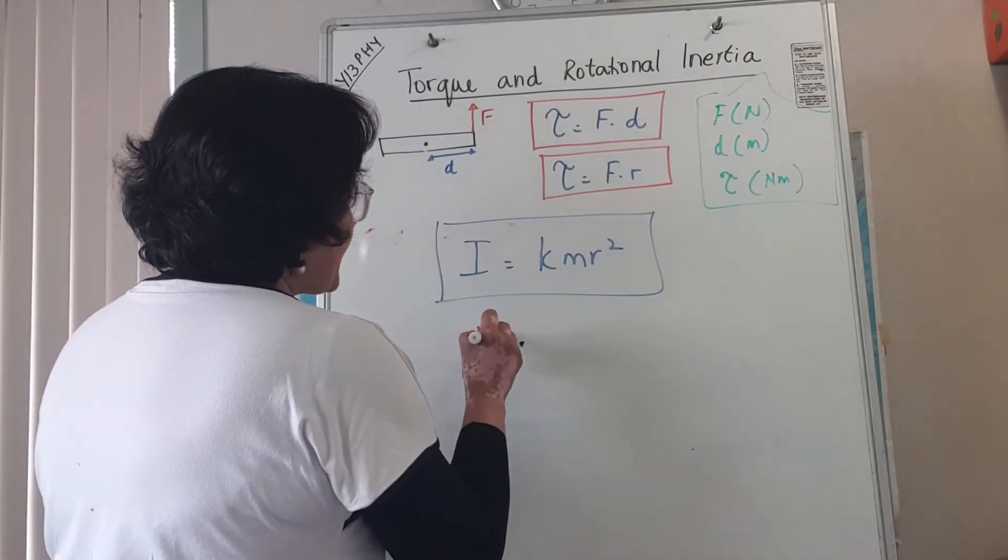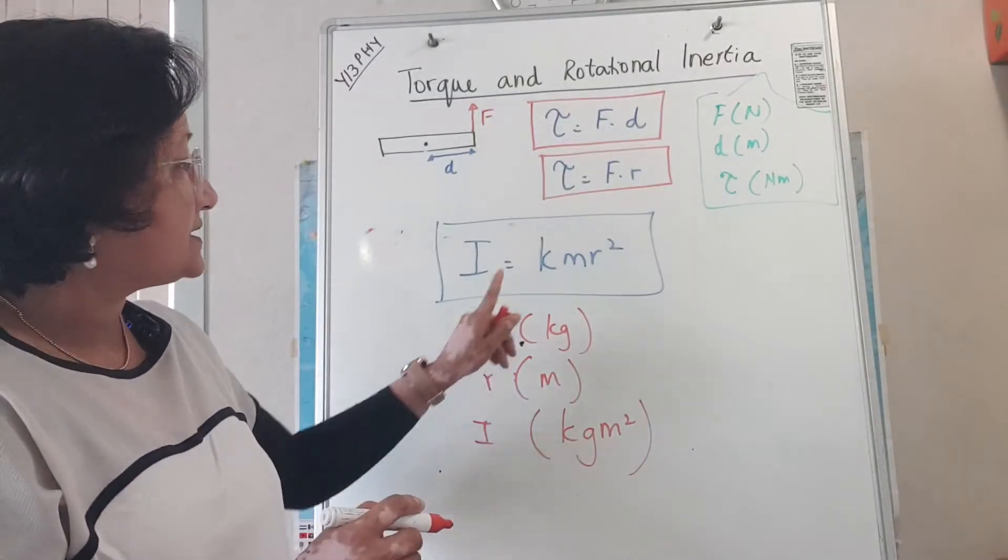And the unit for rotational inertia basically depends on the units for mass and radius. Mass is measured in kilograms, your radius is measured in meters, so rotational inertia has a unit kilogram meter squared. That's how you figure out what the unit for one of these quantities are. Look at the formula, and then just break it down. That's just a constant, that's a number.